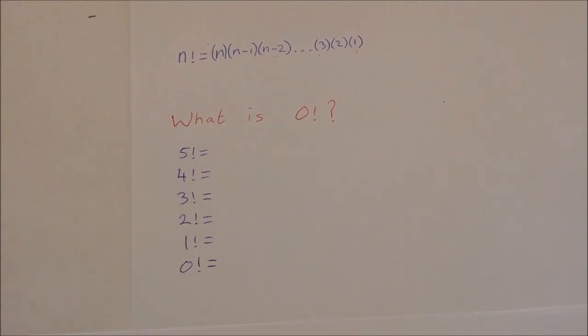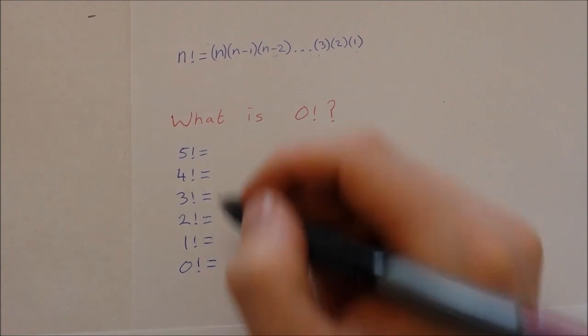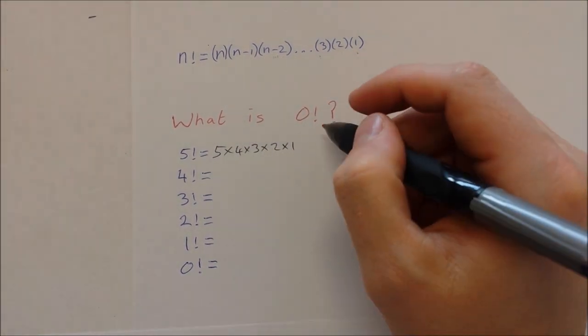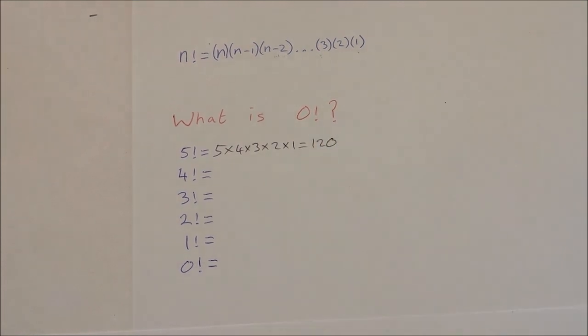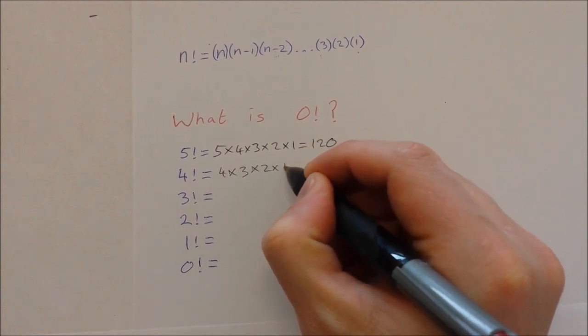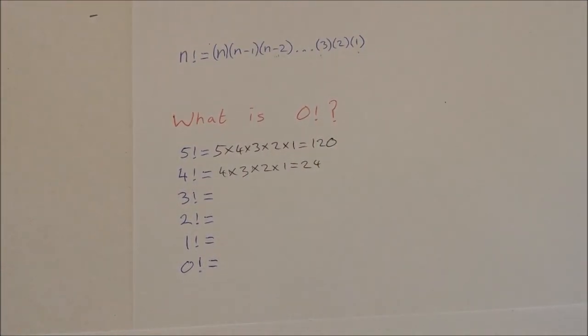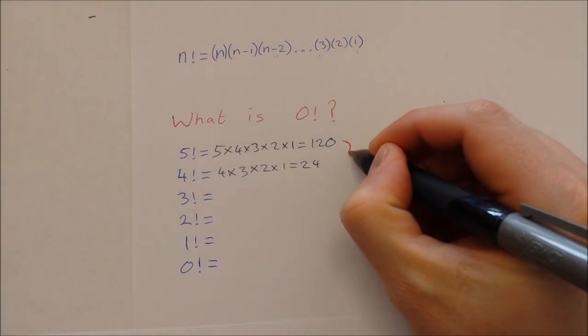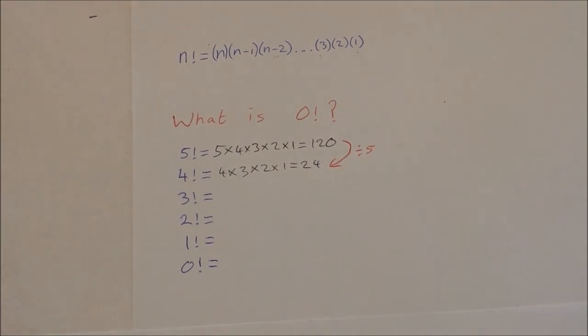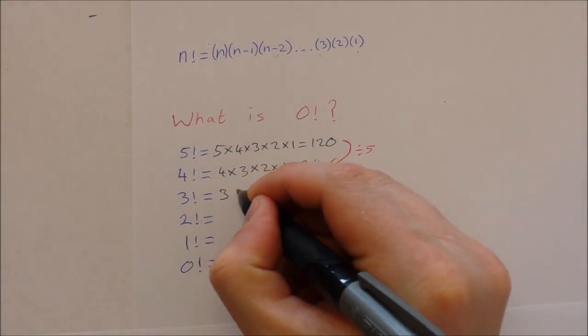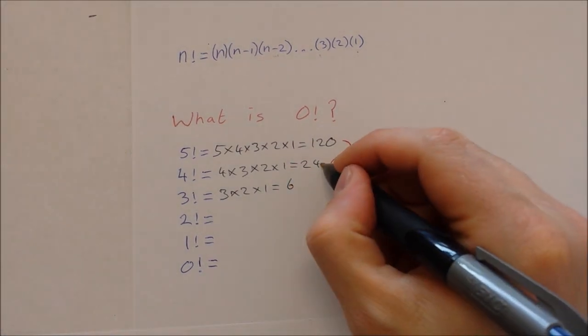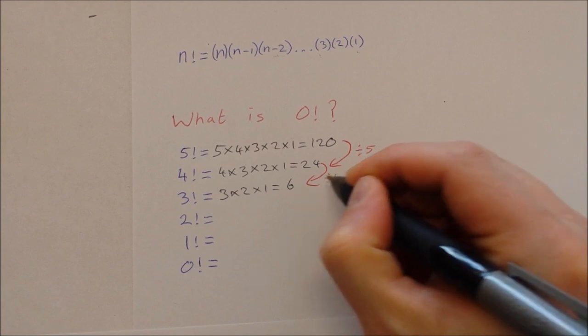What I'm going to do is start on 5 factorial. So 5 factorial is 5 by 4 by 3 by 2 by 1. That works out to be 120. 4 factorial is 4 by 3 by 2 by 1. That works out to be 24. Now, if you notice, 120 divided by 5 is 24. Let's take a look at 3 factorial. That's 3 times 2 times 1. That's equal to 6. And 24 divided by 4 is 6.